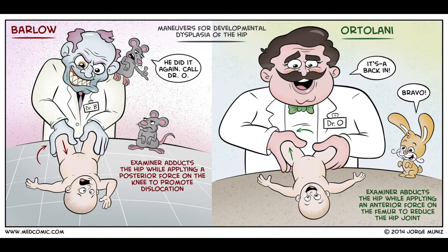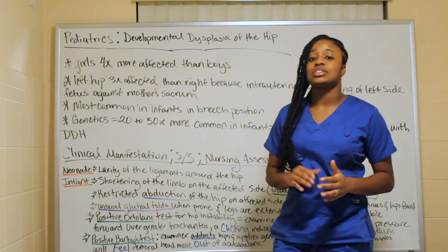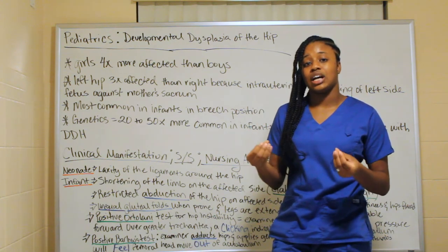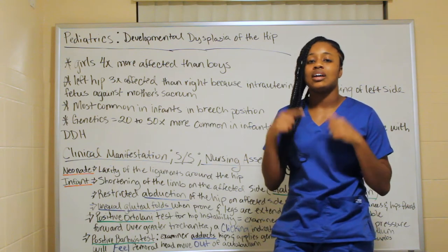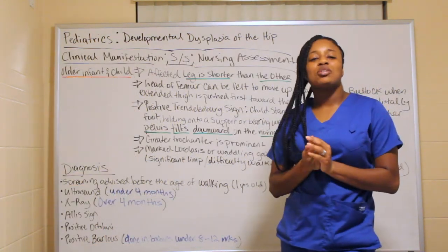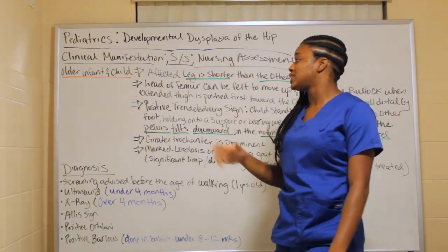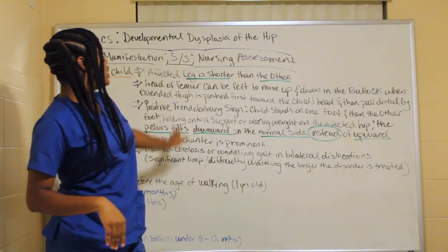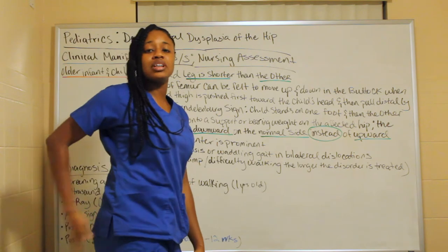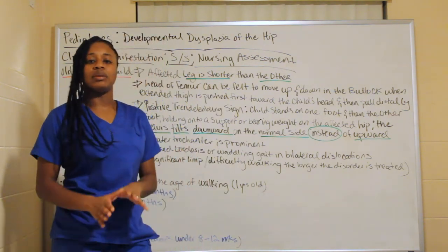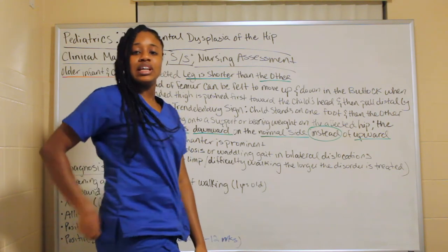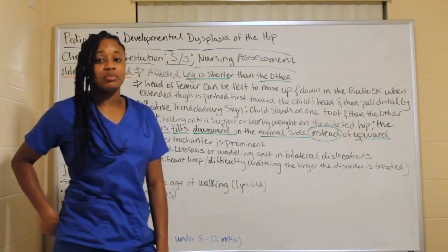Links will be in the description box showing demonstrations of these tests since the adduction and abduction terminology can be confusing. In older infants and children, the affected leg will be shorter. The head of the femur can be felt moving up and down in the buttocks area when you extend the child's thigh upward toward their head and then pull distally.